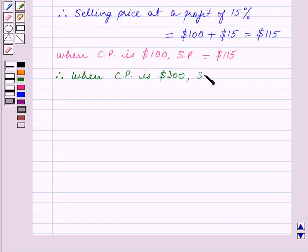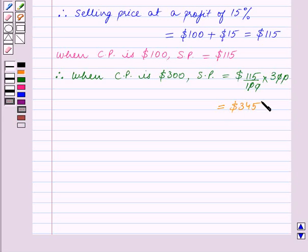Selling price is equal to $115 upon $100 multiplied by $300, which equals $345. Therefore the selling price is $345.